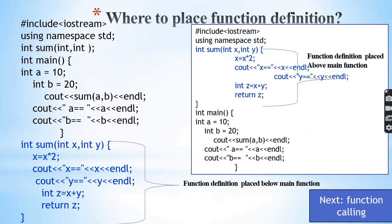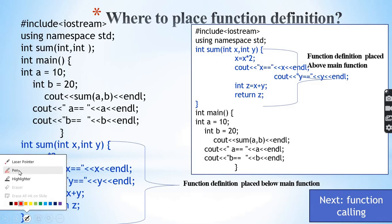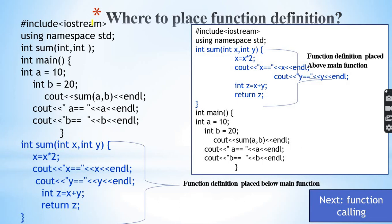Example. This is a program, a full program. In this program we have iostream, using namespace std. Then we have function declaration: int sum, with two parameters, int x, int y. These are formal parameters.